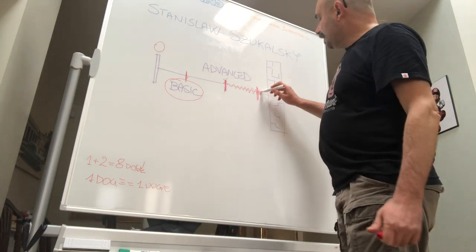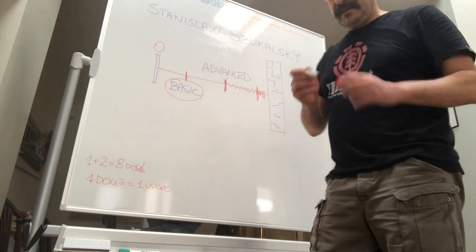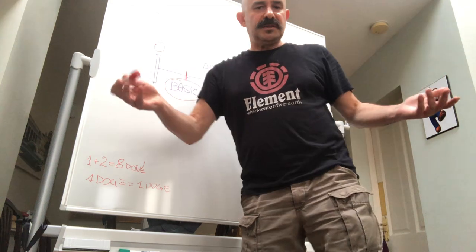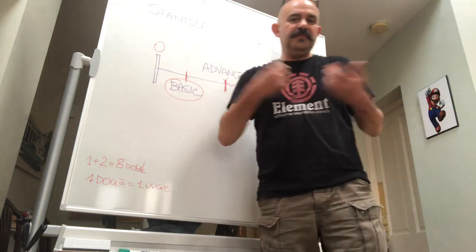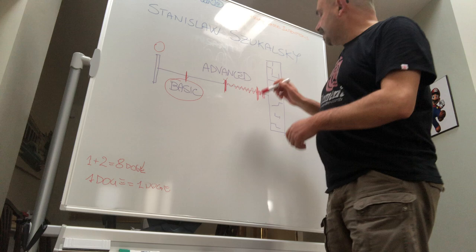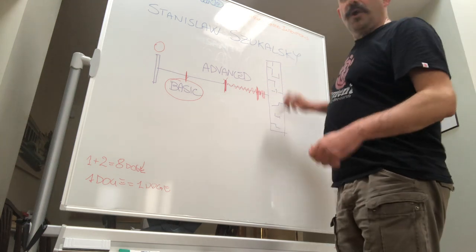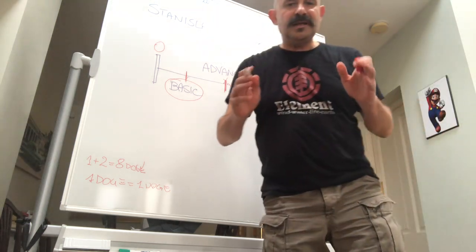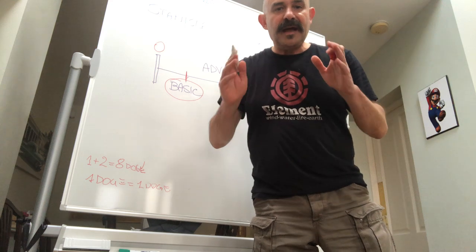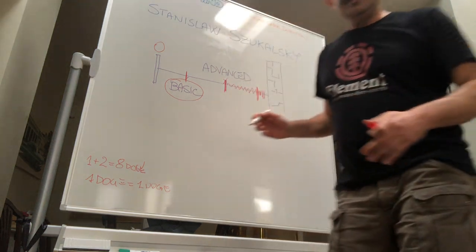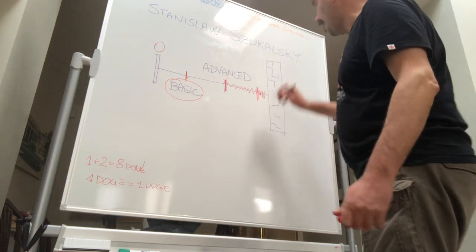In learning, we get to this little place, and we could stay there forever. Most of us stay forever. What happens here? There is this wall that doesn't allow us to get out and learn more. I call it the wall of insanity.